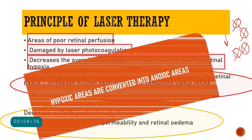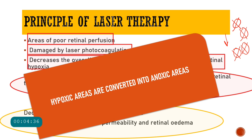The laser converts hypoxic areas into anoxic areas — the cells are coagulated, their enzyme machinery is shut down, and they no longer need any oxygen. The remaining good retina can then utilize whatever oxygen is available. This is the principle of laser therapy in diabetic retinopathy.